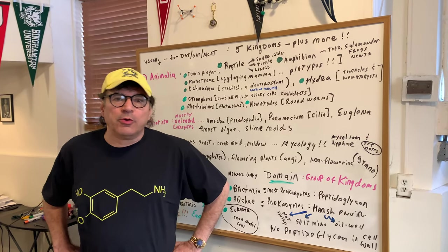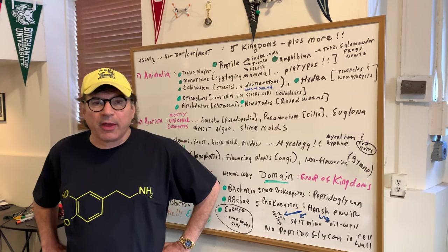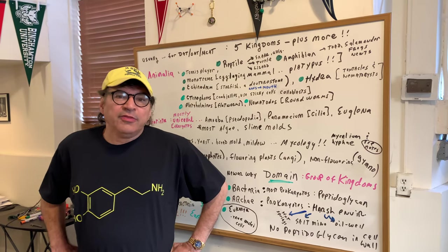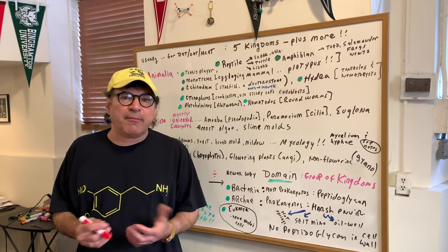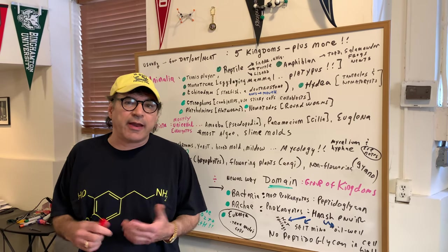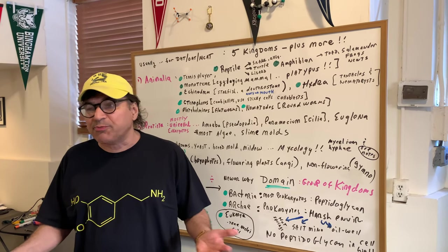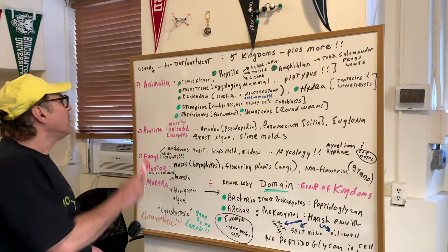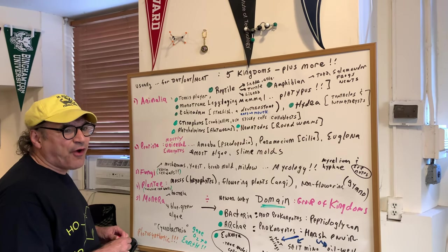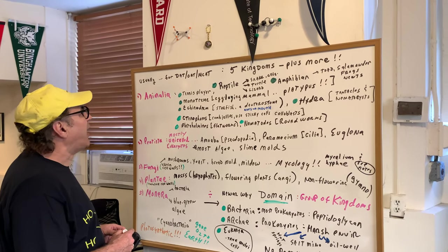Hi, I'm Dr. Romano. I'm going to go over with you a few pointers on taxonomy, which is a very important topic for the DAT and the OAT exam. None of this is really going to make you any money, but it'll help you on the DAT and the OAT. It's not going to help you become a better optometrist nor a better dentist, but we've got to do it — it's boring, let's get it out of the way. For the DAT, OAT, or MCAT, we're going to consider five kingdoms, plus I'll refine that for the newer classifications.